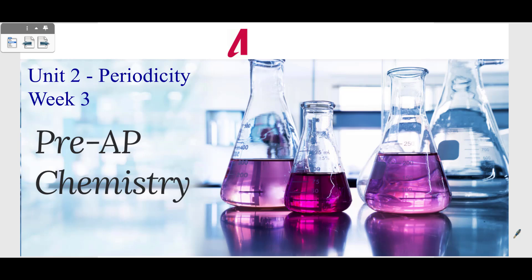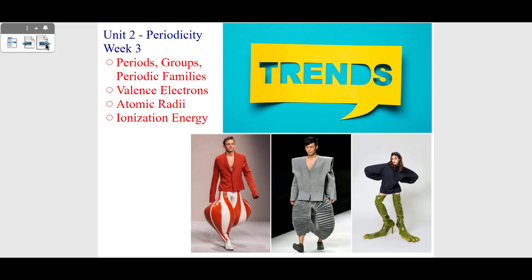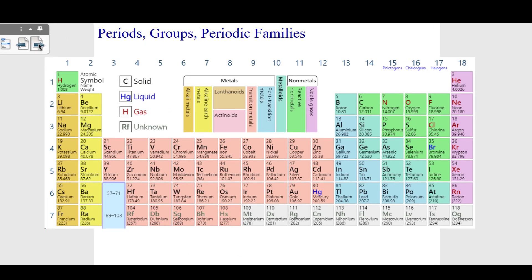Hey, this is Mr. Aiden. Welcome back to Pre-AP Chemistry. We are on to Unit 2 Periodicity. This is Periodic Trends, and we are in Week 3. In Week 3, we're going to be looking at periods, groups, periodic families, valence electrons, the atomic radii — how big an atom is — and the ionization energy, the energy to remove an electron. So let's take a look at these periodic trends.